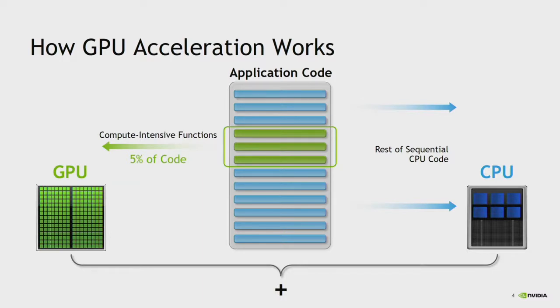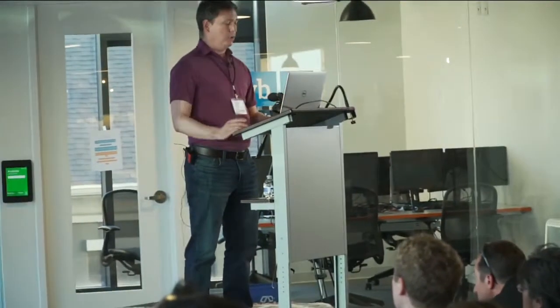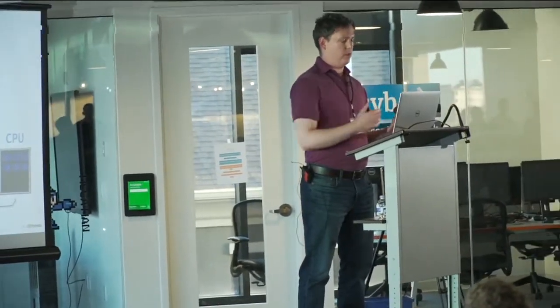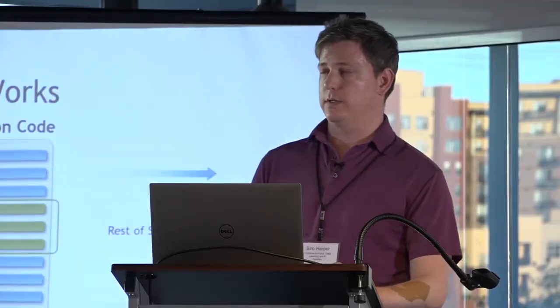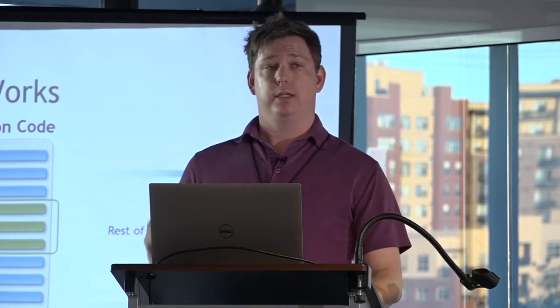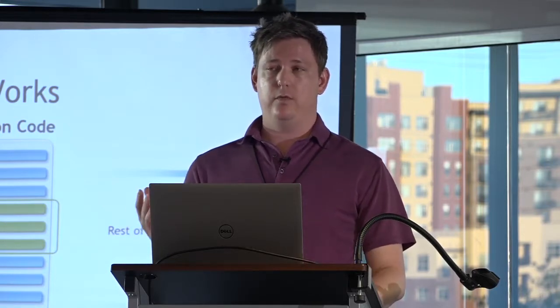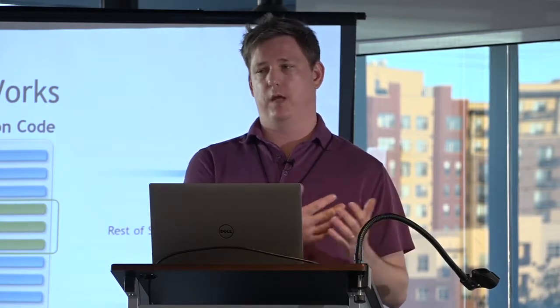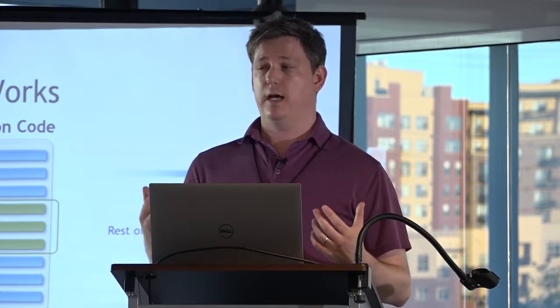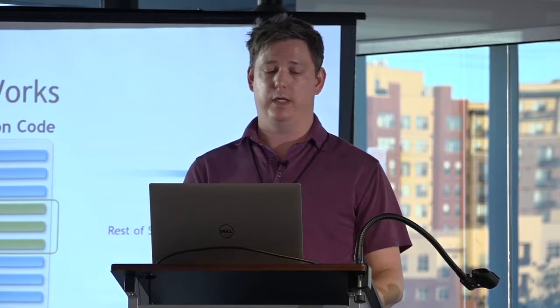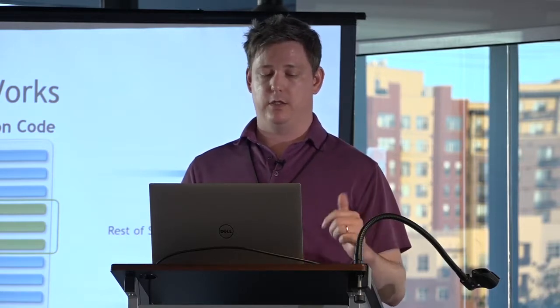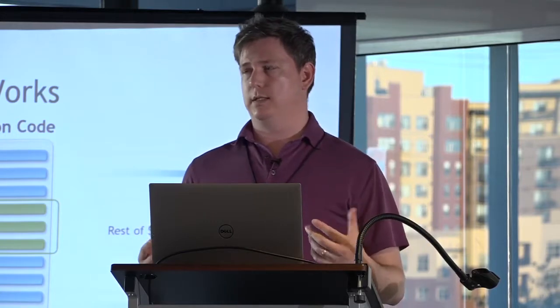How does a GPU work? At a very high level, GPUs have lots of little cores where CPUs have a few bigger cores. In the GPU, you're talking about thousands of cores; in the CPU, you're in the tens of cores. The whole idea behind GPU acceleration is that if you have a very large compute-intensive operation you're trying to compute — if you can move that calculation to the GPU and move it back — and the time saved doing the computation on the GPU is greater than the time spent moving it, then you've successfully accelerated your application.